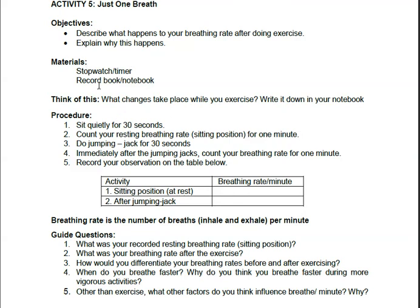Make sure you have all your materials. Sit quietly — just sit — for 30 seconds and count your resting breathing rate. Then sit in position for one minute. Do jumping jacks for 30 seconds. Immediately after the jumping jacks, count your breathing rate for one minute and record your observation. Breathing rate is the number of breaths — inhale and exhale — per minute. So when sitting for 30 seconds, count how many times you inhale and exhale per one minute. The same thing: after jumping jacks for 30 seconds, count how many breaths you take within one minute.